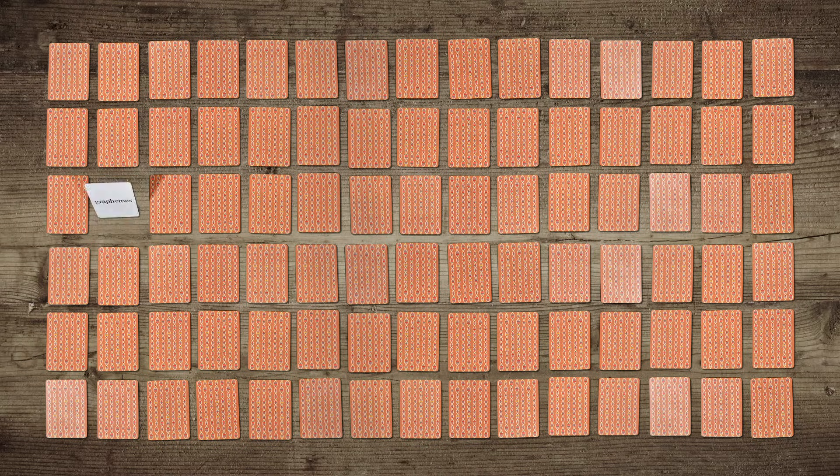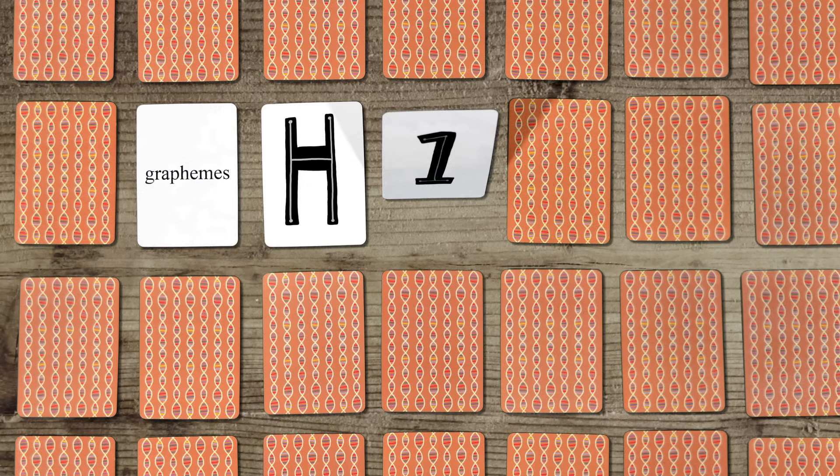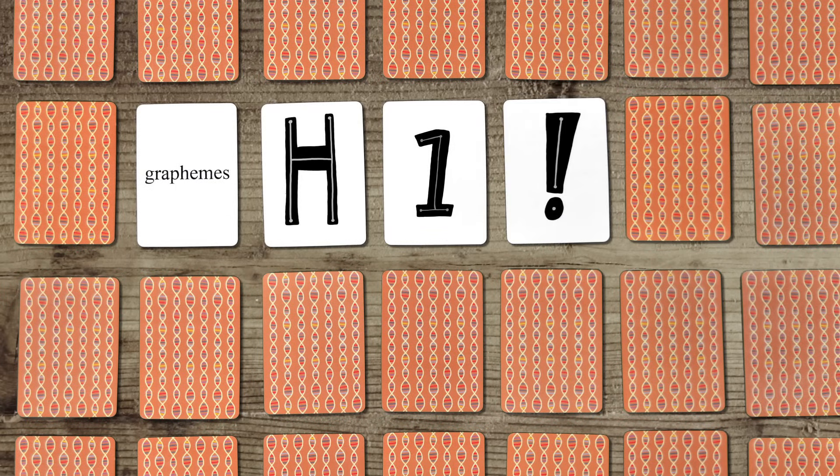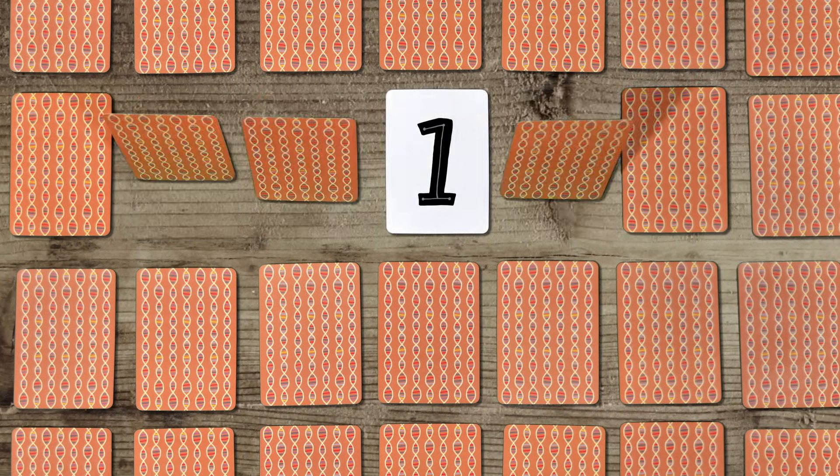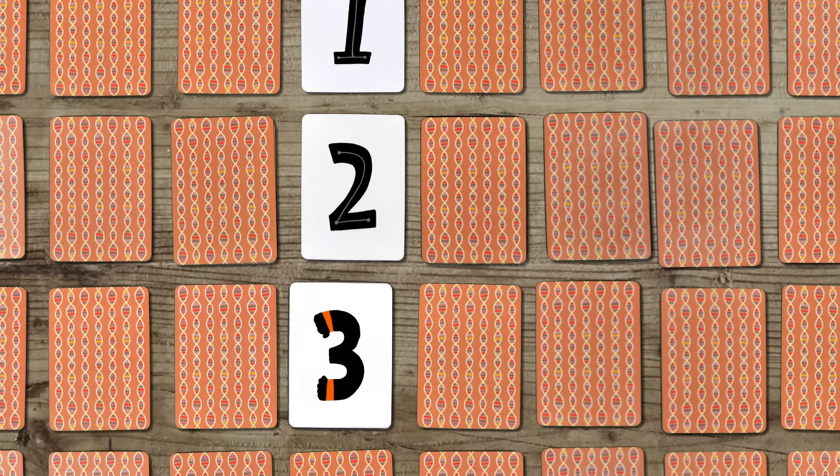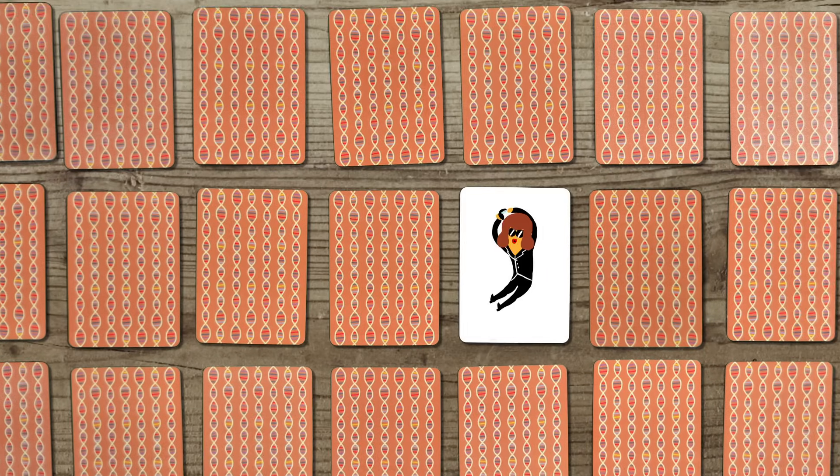One in 90 among us experience graphemes, the written elements of language like letters, numerals, and punctuation marks, as saturated with color. Some even have gender or personality. For Gail, three is athletic and sporty. Nine is a vain, elitist girl.